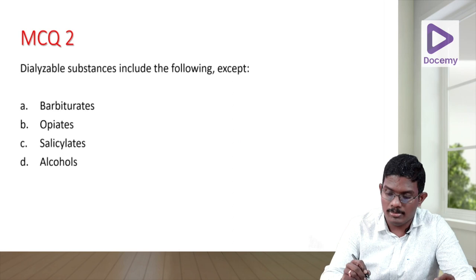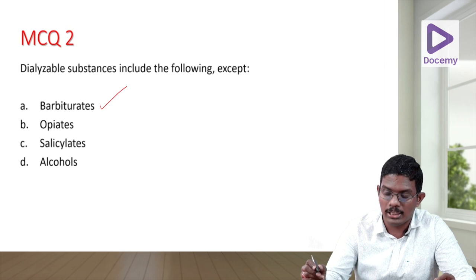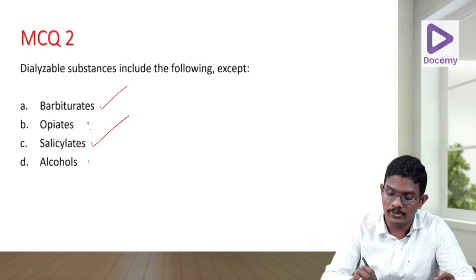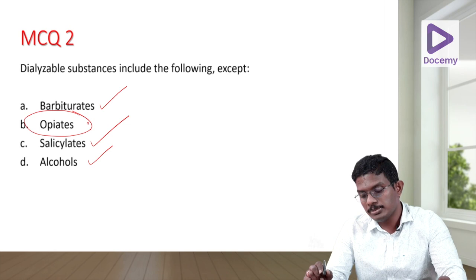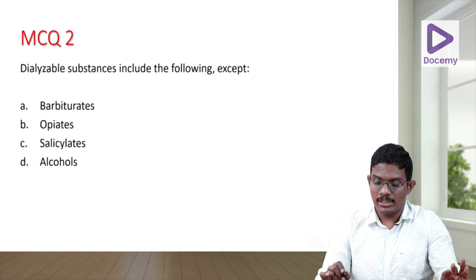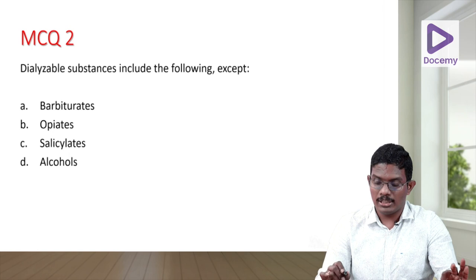Question: What are the dialyzable substances, except? Barbiturates — yes, they can be dialyzed. Opiates — this is the exception; opiates cannot be dialyzed. Salicylates — yes, dialyzable. Alcohols — yes, as mentioned with methanol toxicity, dialysis is key. So the answer is opiates. Remember: barbiturates, salicylates, and alcohols are dialyzable; opiates are not.